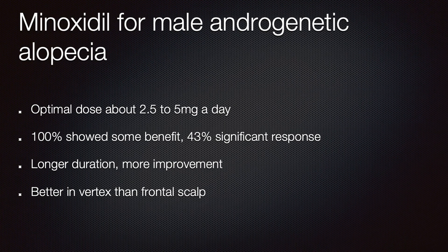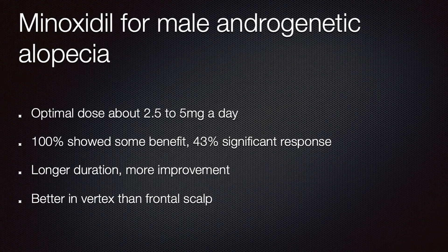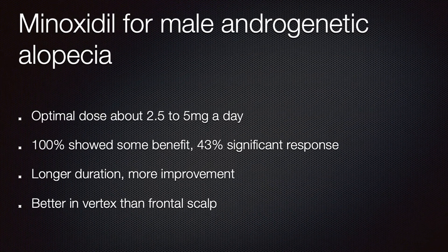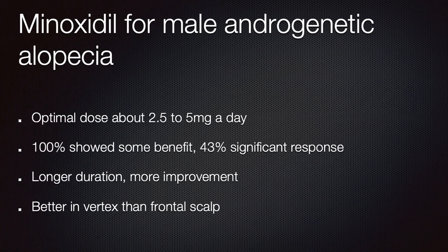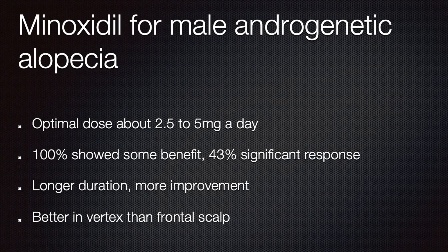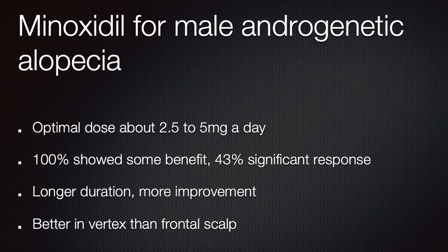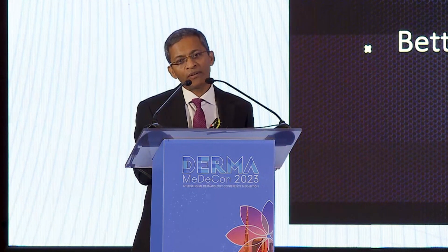For male androgenetic alopecia, the dose is slightly higher — you probably start at 2.5 milligrams and then increase. The Thai study of 70 patients showed 100% had some improvement in hair growth, with 43% having a very significant response. They noticed the longer you use it the better it works, so we should give it for at least three to six months. Hair thickening was found everywhere but was probably better in the vertex than in the frontal scalp.